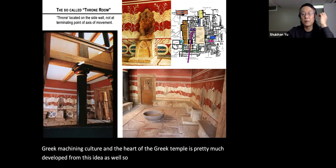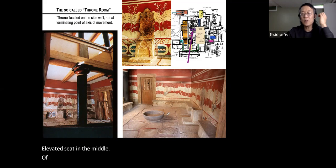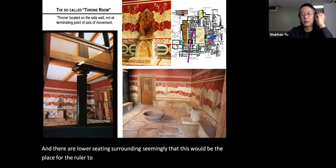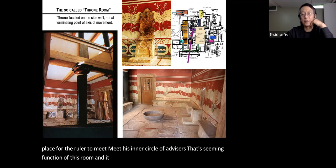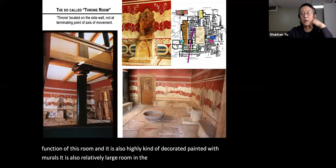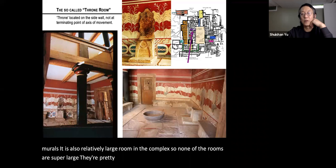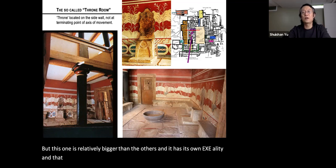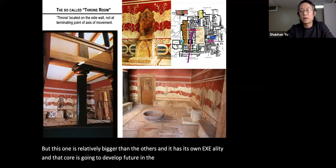The throne room features an elevated seat on the side wall and a fire pit in the middle, with lower seating surrounding it — seemingly a place for the ruler to meet his inner circle of advisors. It is highly decorated with murals and is relatively the largest room in the complex. Most rooms have no windows; light and ventilation came through the porch and courtyards. The exterior walls are totally windowless with thick, solid walls, and the overall outline is very irregular.